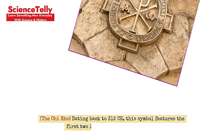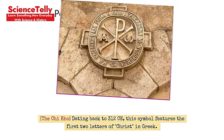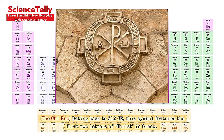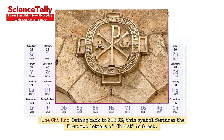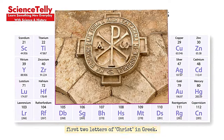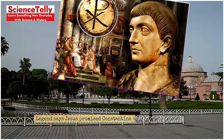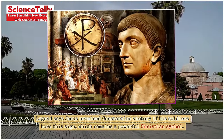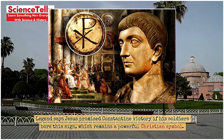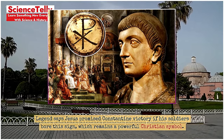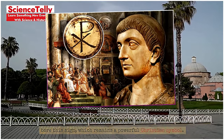The Chi-Rho, dating back to 312 CE, features the first two letters of 'Christ' in Greek. Legend says Jesus promised Constantine victory if his soldiers bore this sign, and it remains a powerful Christian symbol.